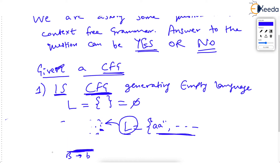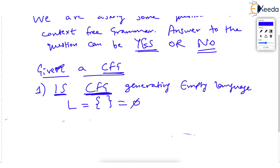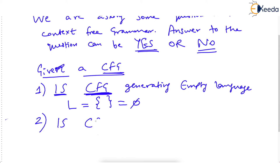So what kinds of decision properties are we talking about? The first one is: is the CFG going to generate an empty set or empty language? The second is: is the CFG generating a finite language?